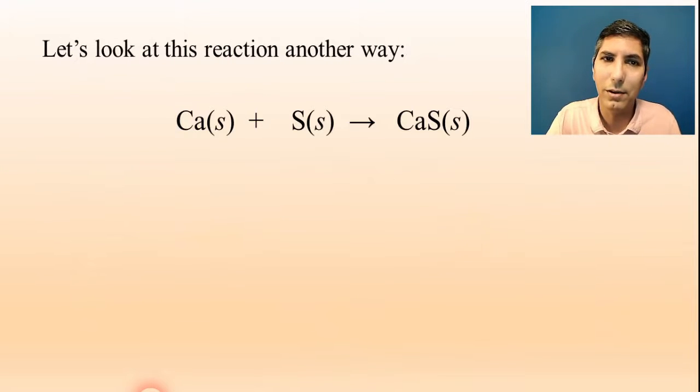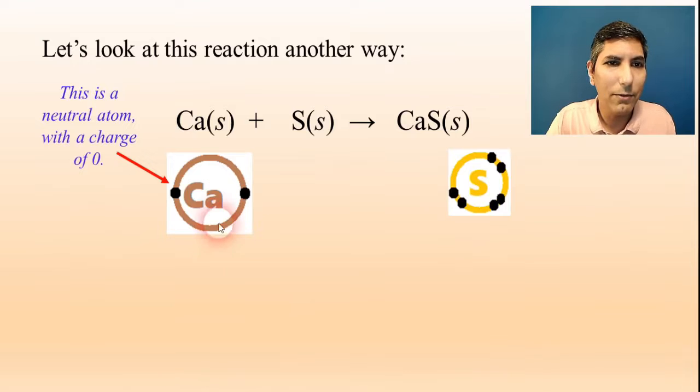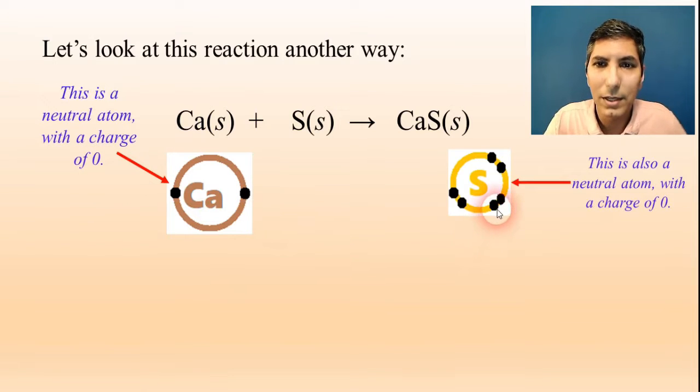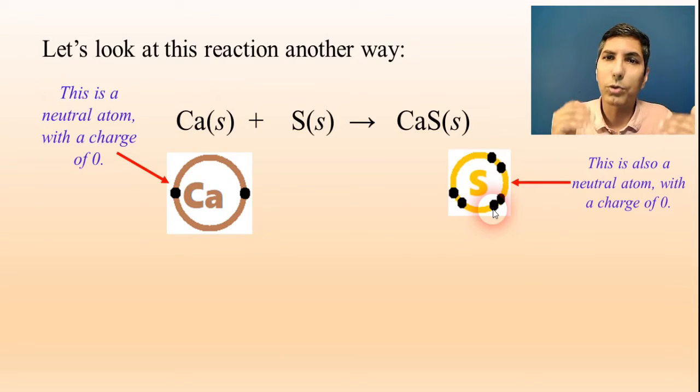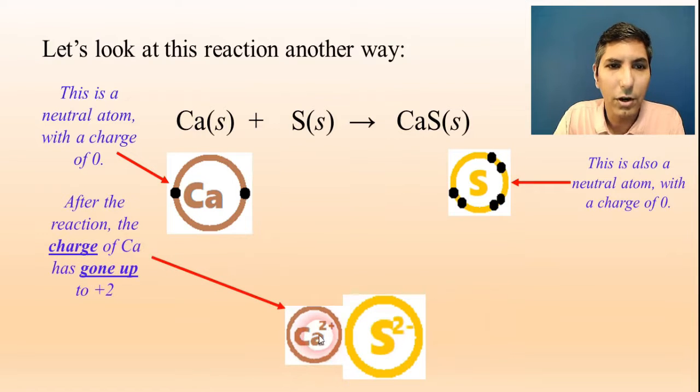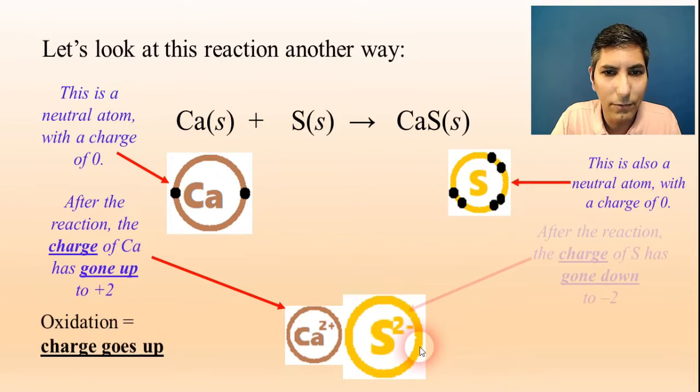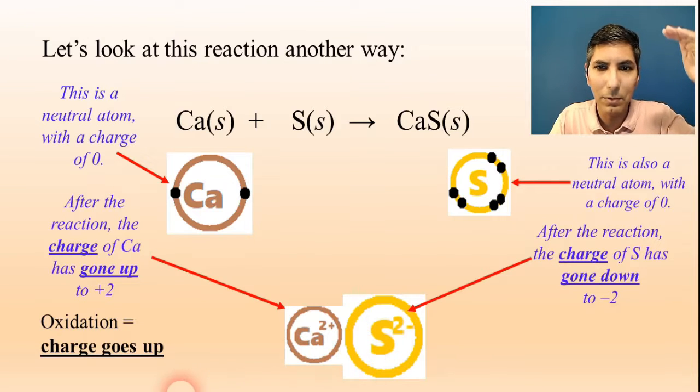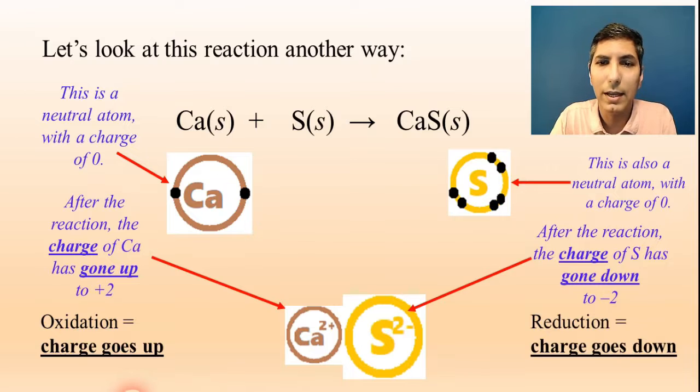Now let's take a look at this from a different point of view. We're looking at the same reaction where calcium starts with a charge of zero, sulfur is also a neutral atom with a charge of zero. But notice what happens to these two atoms over the course of the reaction. After calcium donates those two electrons, calcium actually has a new charge. The charge of calcium went up—it went from zero up to a +2. Anytime you have a charge of something that goes up like that, that is also oxidation. Notice that the charge of sulfur went down. It started at zero and went down to -2. That's another way of looking at a reduction.